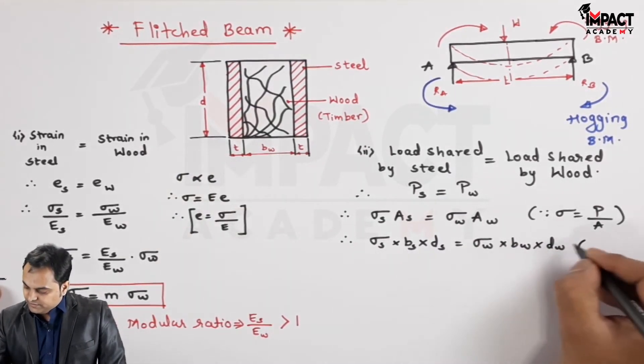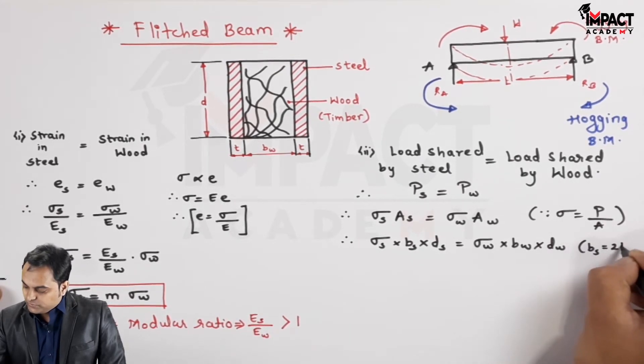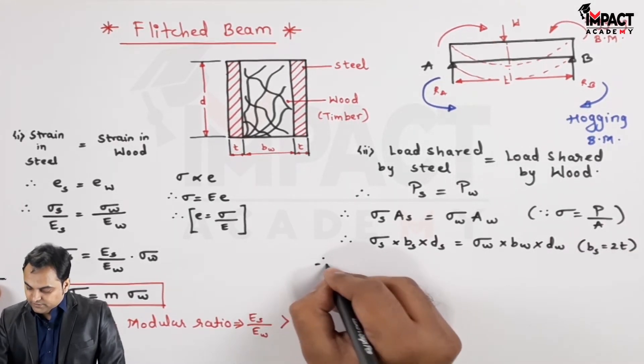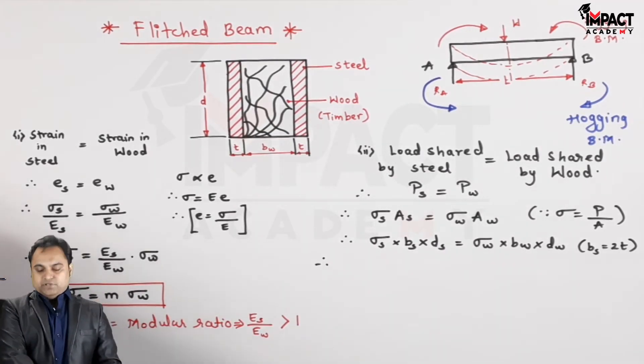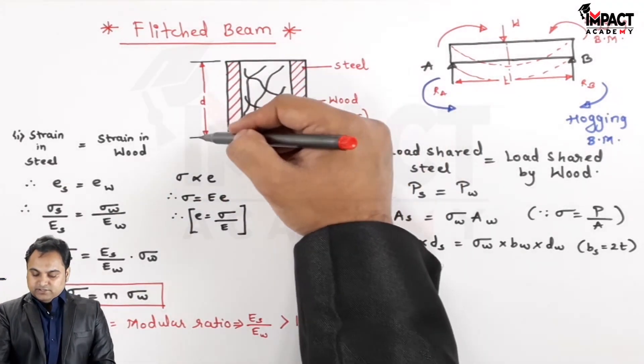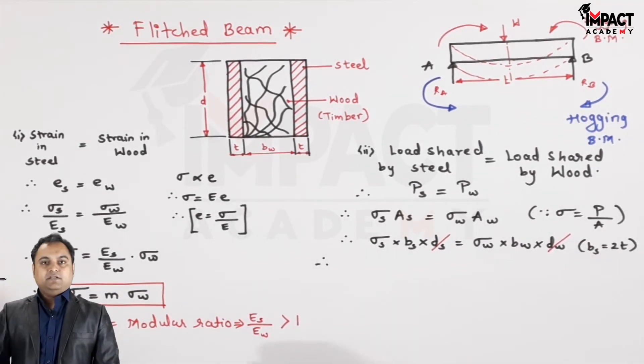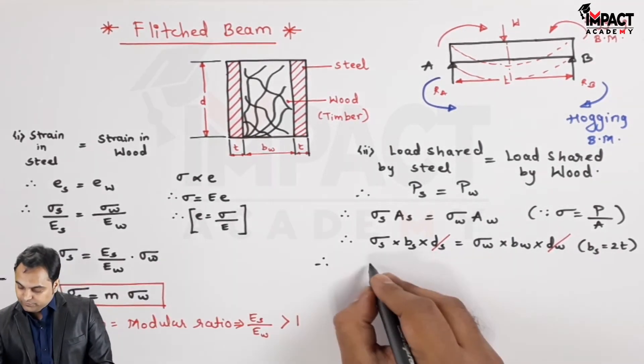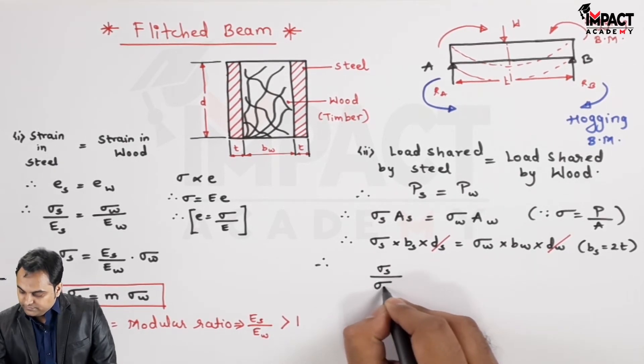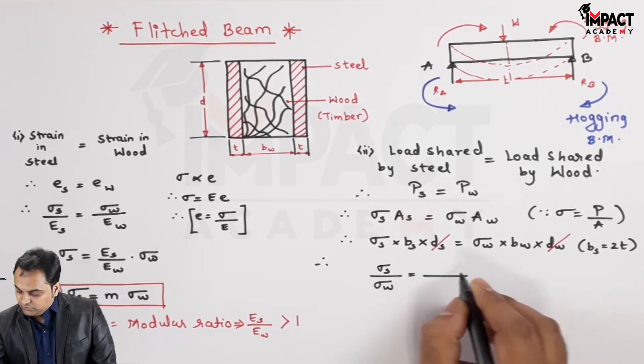And here I have taken b_s the total width of s, twice of thickness. Now therefore since the depth is same in steel and wood so d would get cancelled out